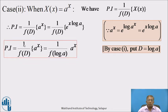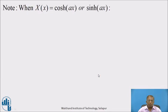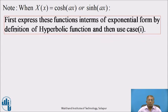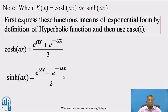Hence, since the coefficient of x is log a, put D = log a in the denominator. Therefore, PI = 1/f(log a) · a^x. It means that for X(x) = a^x, to find the particular integral, put every D = log a in the denominator f(D). Note: when X(x) is cosh(ax) or sinh(ax), first express these in exponential form using the definition of hyperbolic functions and then use Case 1: cosh(ax) = (e^(ax) + e^(−ax))/2 and sinh(ax) = (e^(ax) − e^(−ax))/2.